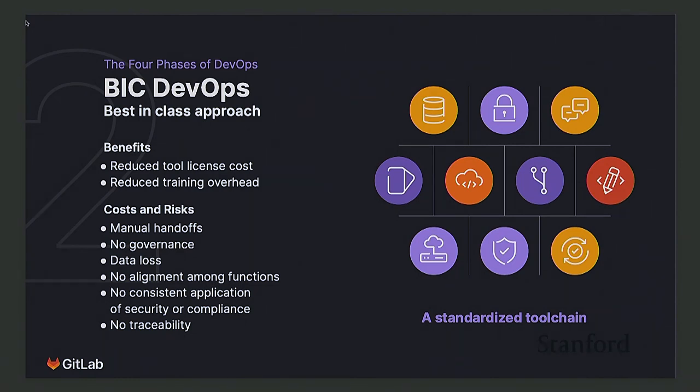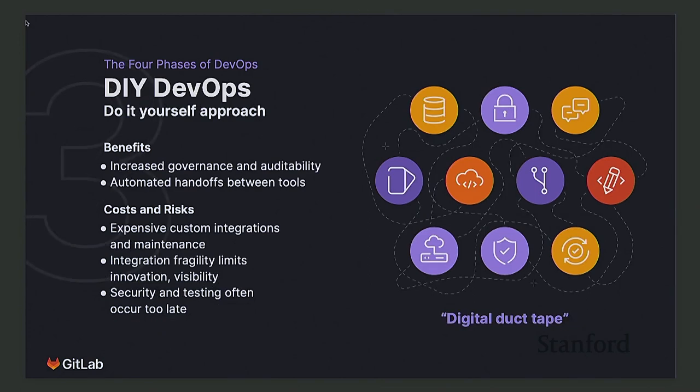But what didn't go very fast is the cycle time. The cycle time is the time between deciding to do something and getting it out there. And that didn't go very fast because you had to hop between these different tools. So the company said, you know what, we're going to make these integrations better so that you lose less context in between these hops. And then that's the era of DIY DevOps. This is where 80% of all companies are now.